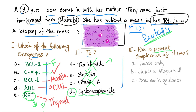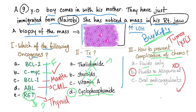How to prevent complications of chemo? Fluids, fluids and allopurinol, or oral anticoagulants? Here, the question is talking about tumor lysis syndrome. So the correct answer is both fluids and allopurinol. Allopurinol is a xanthine oxidase inhibitor to prevent the formation of uric acid.